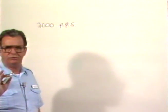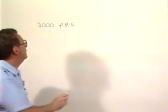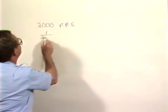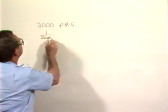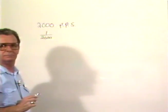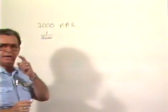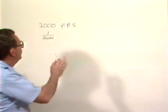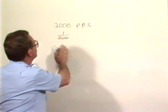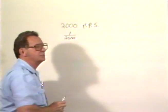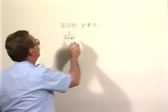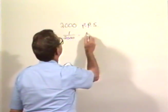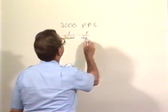We had a radar set that put out 2,000 pulses per second. If a radar set is putting out 2,000 pulses per second, it means that each pulse is one two-thousandth of a second in length. We want to break this down to microseconds, because that's what we're going to be dealing with.